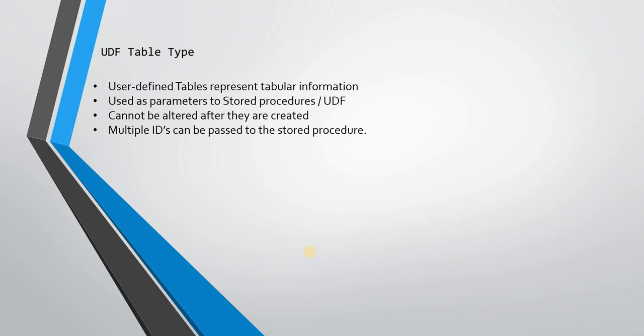User-defined table types represent tabular information. When you create this kind of data type, it can hold table-type values — that is, values in rows and columns. They are used as parameters to stored procedures and UDFs, which is called a table value parameter. You can pass user-defined table types to a stored procedure, as we will see in the demo. They cannot be altered after they are created — there is no ALTER statement possible with user-defined table types.